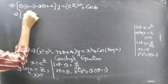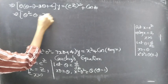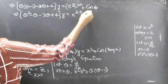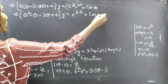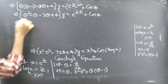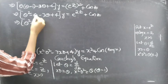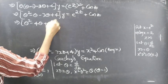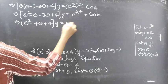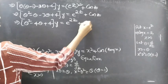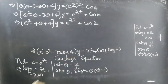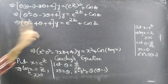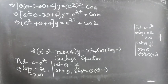Then theta(theta minus 1) minus 3·theta plus 4, into y, equals e^(2z) plus cos z. Expanding: theta² minus theta minus 3·theta plus 4 gives theta² minus 4·theta plus 4. So we have reduced the given equation to an equation with constant coefficients.